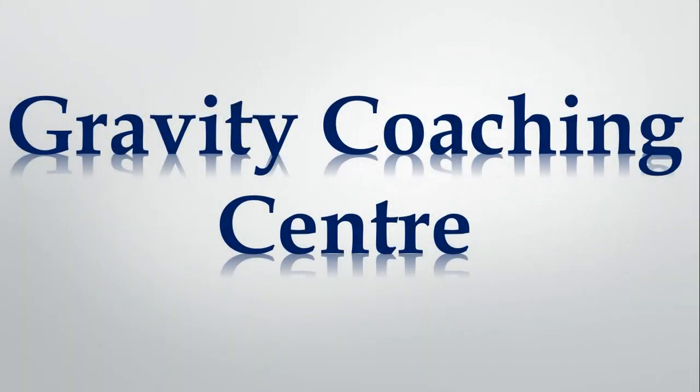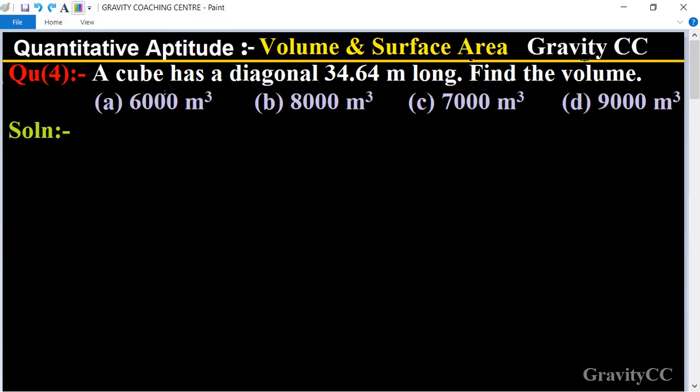Welcome to our channel, Gravity Coaching Center. Quantitative Aptitude, chapter Volume and Surface Area. Question number 4: A cube has a diagonal 34.64 meters long. Find the volume.